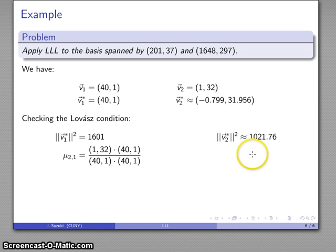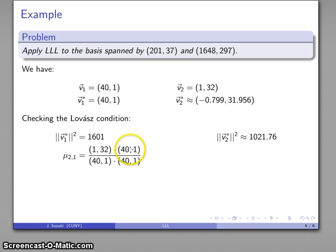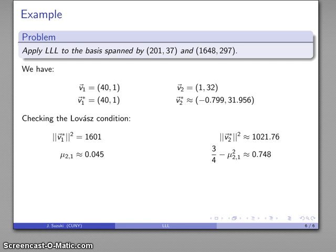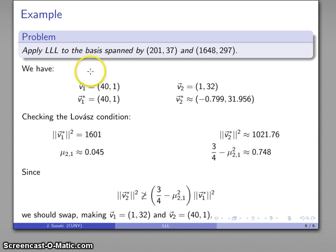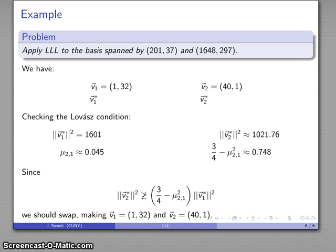I'll compute the Lovász condition: the magnitude of the Gram-Schmidt basis, the dot product of the working vector with the Gram-Schmidt basis over the Gram-Schmidt basis magnitude squared, giving μ ≈ 0.045. Checking the Lovász condition, the magnitude squared is not greater than or equal to (3/4 - μ²_{2,1}) times the magnitude squared, so again we should swap our two basis vectors and continue.